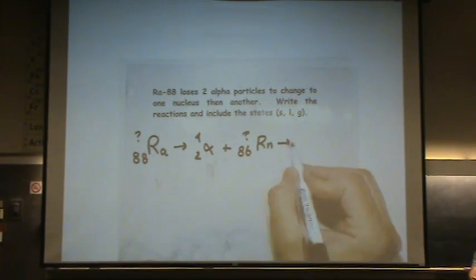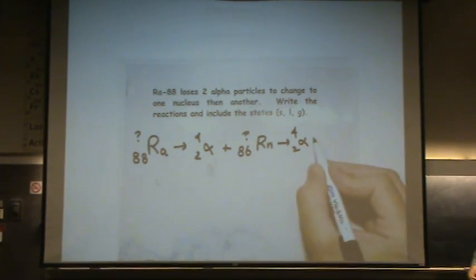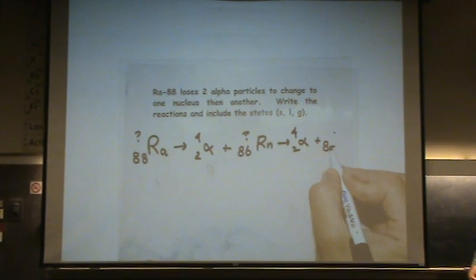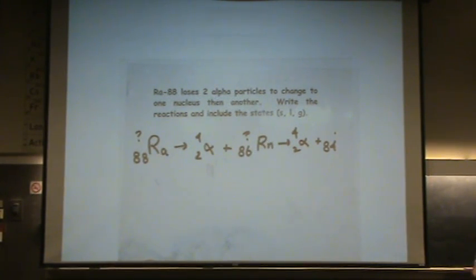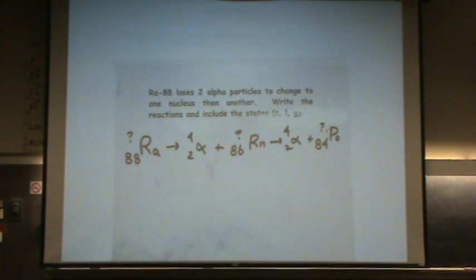And then it decays again. With another alpha particle, it will have to go down to 84. 84th polonium. With 4 less than it originally started with.